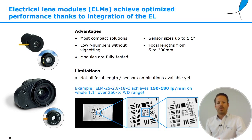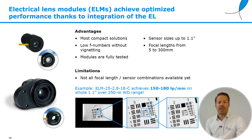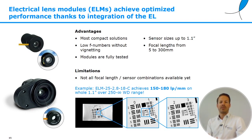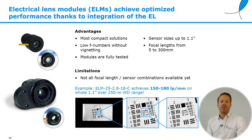The limitation is that not all focal lengths are available yet — we're still populating the space of different focal lengths and sensor sizes. As an example, the ELM25 is a 25mm focal length for 1.1-inch sensors, offering a working distance range from 250mm to infinity. As you can see in the data, we really get pixel-limited resolution — we're talking about 150 to 180 line pairs per millimeter across the field. I'm very excited about this development.